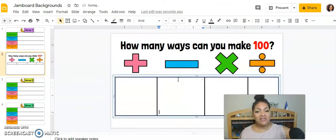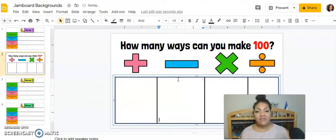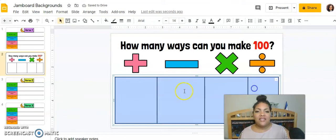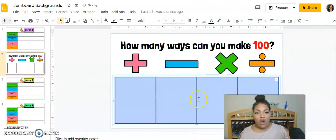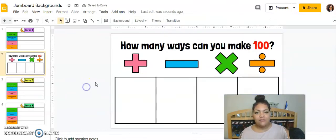I'm going to press enter a bunch because I want the kids to be able to have space to put their answers. Something else I might do too, is to highlight, right click and distribute the columns. That way they are exactly the same size.